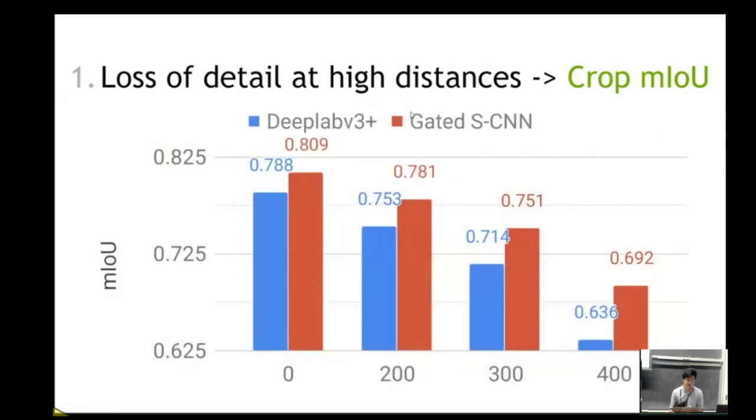Here we can see that in the strictest regime, 400 crop, we get close to a six percent upgrade in mean intersection over union. We can also see that the quality of maps for DeepLab V3 plus decreases at a much faster rate than in ours with distance. So we can see that our network is more robust to distance than compared to DeepLab V3 plus.